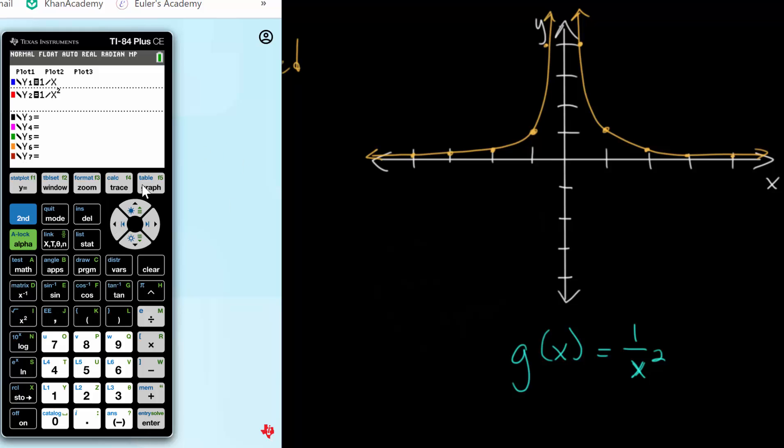For now, I'll turn both graphs on. And I've also customized the window here to match what we used. We go from negative 4 to 4 for our x values, and our y values also go from minus 4 to 4.